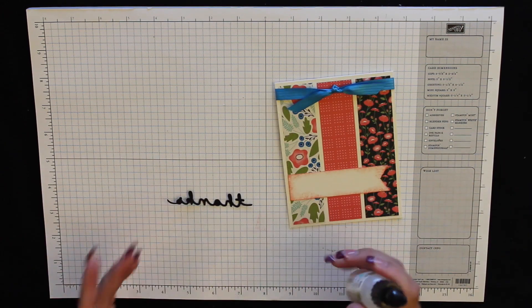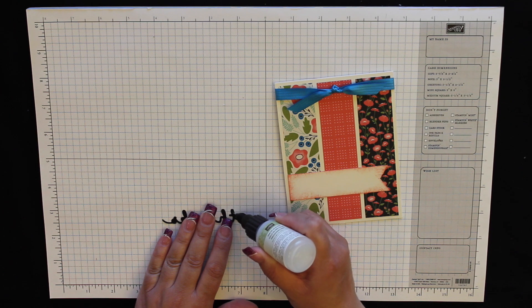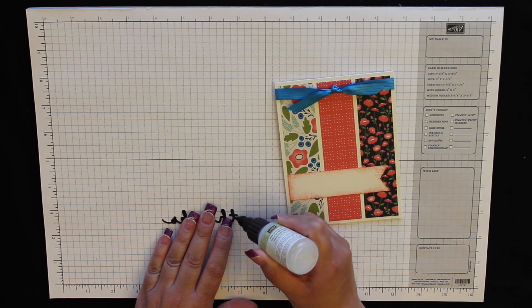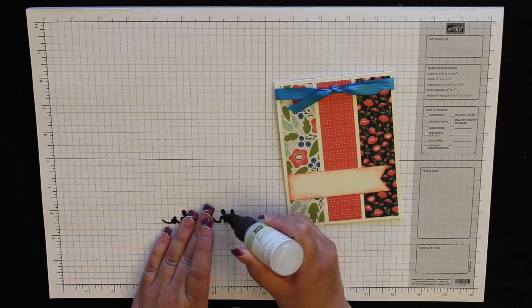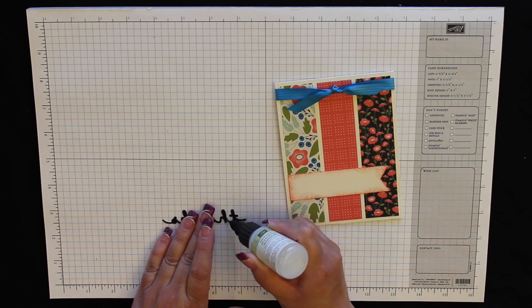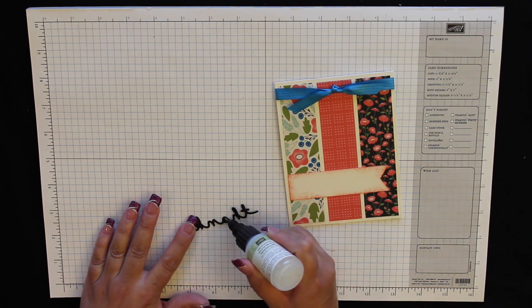So you want to make sure that you have your thanks upside down and you're just going to add little bits of glue along the word. Make sure you don't get too much. You don't want it to puddle outside of the word when you add it onto the cardstock.